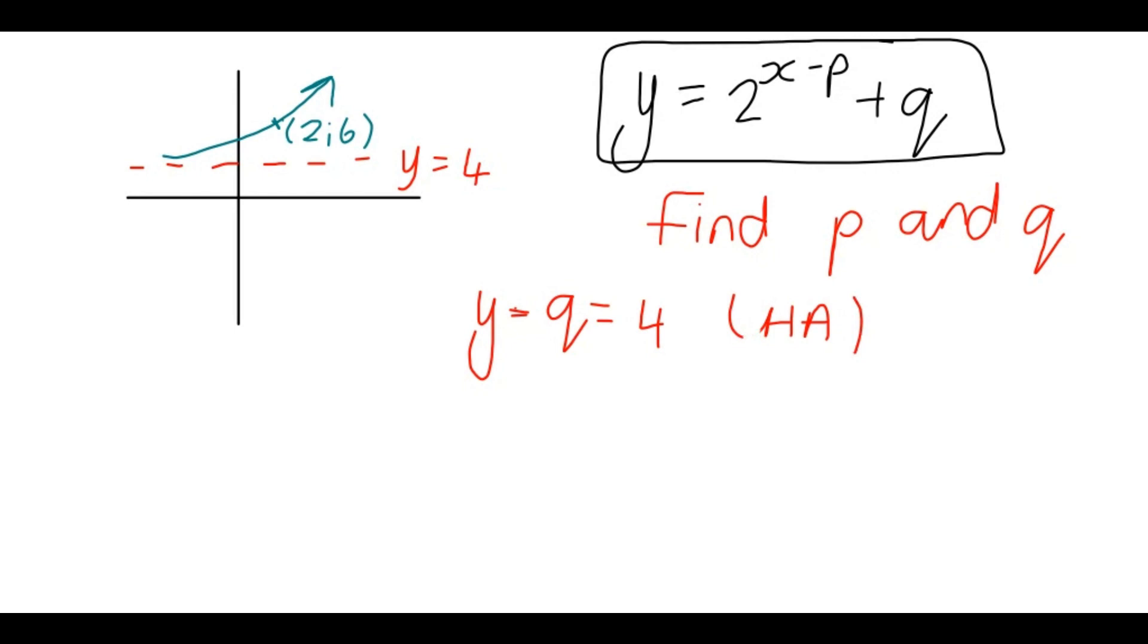And then on the other side, we now need to find p. So I'm going to work with the other point that I have, which is the point 2, 6. They only give me this one point and the point 2, 6. So I'm going to have to work with 2, 6.